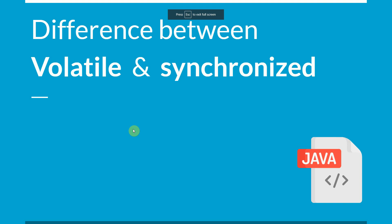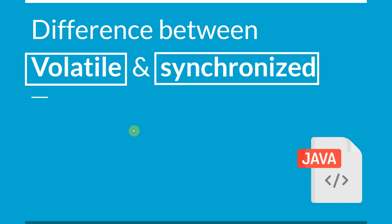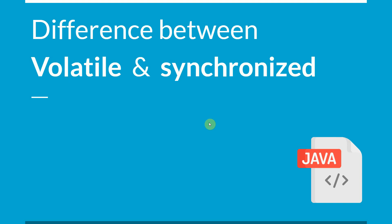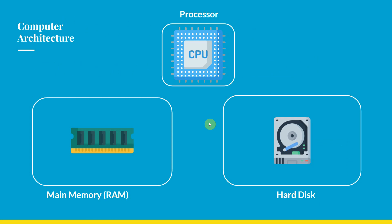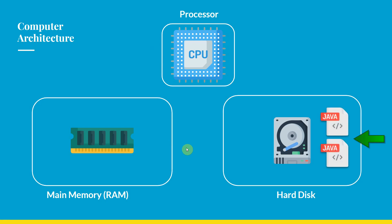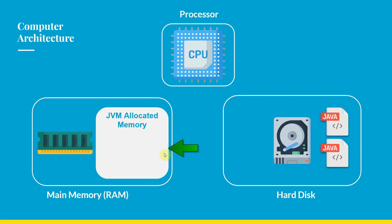In this video we are going to see the difference between volatile and synchronized keywords. Let's look at computer architecture — we basically have hard disk, RAM, and CPU. Whenever we write our Java programs, the .java files are stored on the hard disk, and when we try to execute those programs, JVM will allocate some memory into our RAM and with the help of the CPU it starts executing our program.